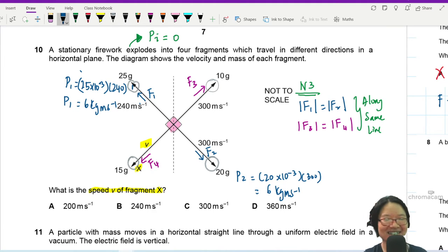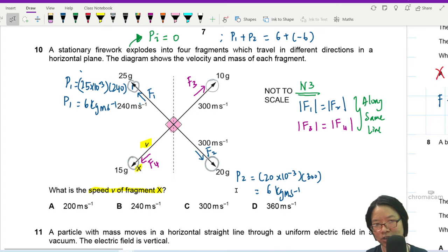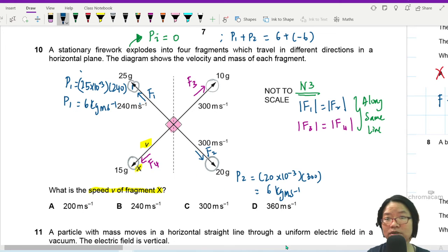P2 will be equal to 20 times 10 to the power of negative 3. And I think if you have a good hunch with numbers, times 300 meter per second, you will also see that this is 6 kg ms negative 1. They cancel out. Very nice. This means the momentum of this thing and the momentum of this thing should be equal in magnitude and opposite direction so that the initial momentum is 0. You can see here that P1 plus P2, which is 6 plus... somebody have to be negative. So let's say I treat P2 as negative because it's opposite direction. So it's 0, which is also equal to initial momentum.